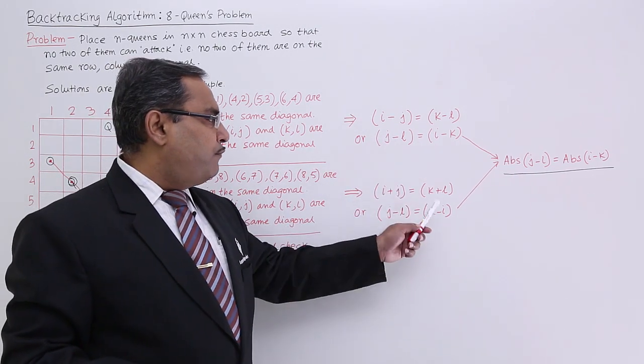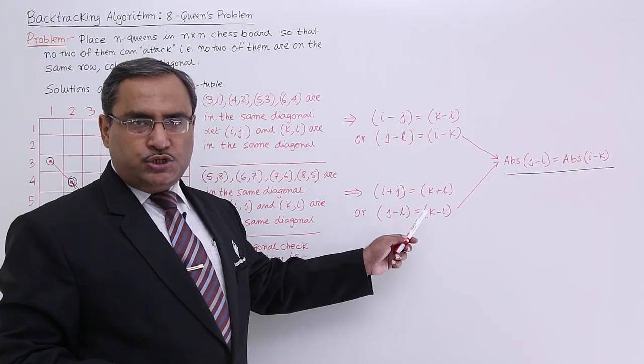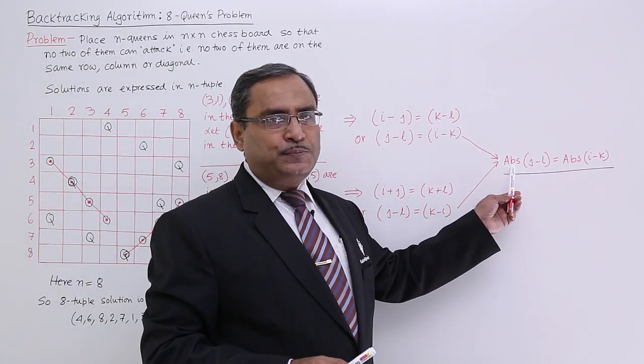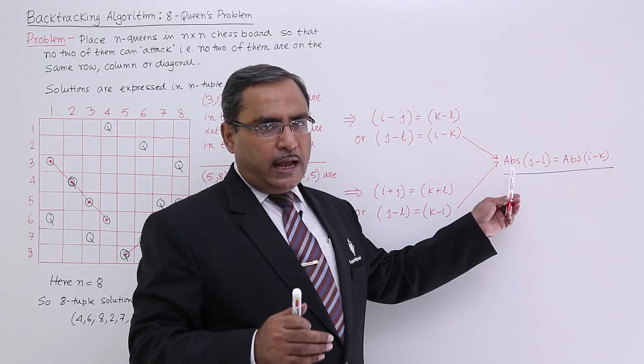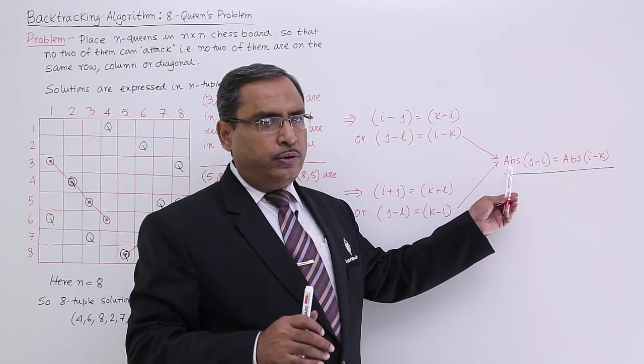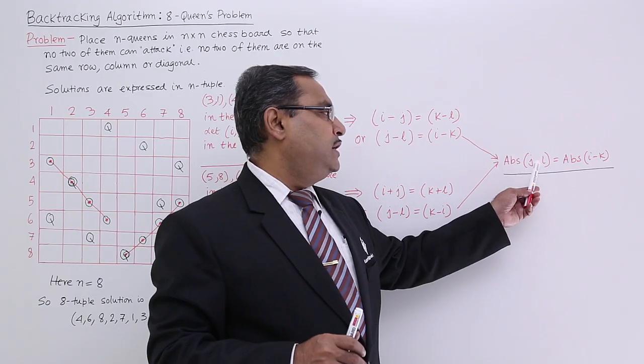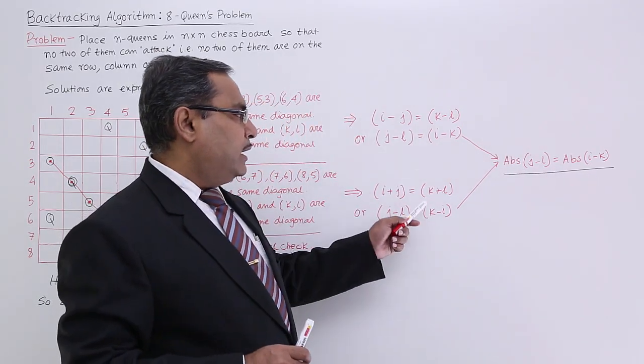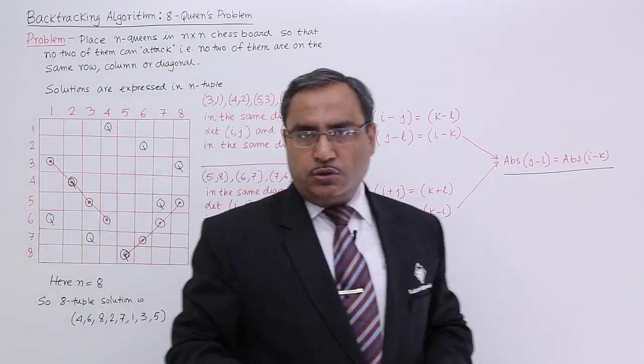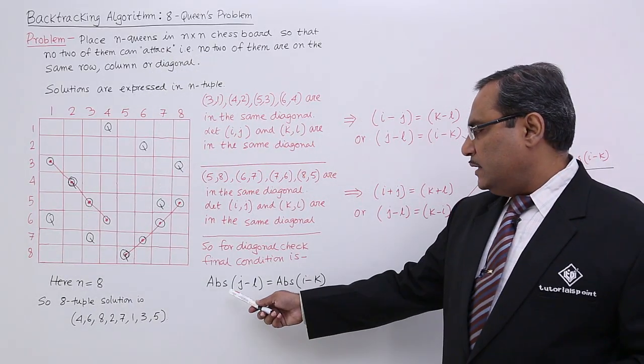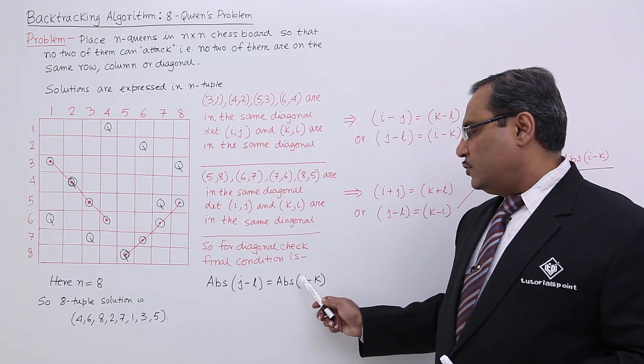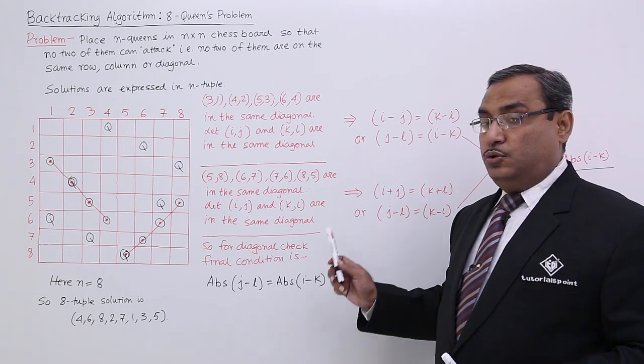Now, if we go for merging these two formula, these two conditions, I am getting abs, that is absolute, that is I am taking I shall take only the magnitude part ignoring the sign. So abs of j minus l is equal to abs of i minus k. So after merging them I am getting this. Now what will happen? There is a formula I am getting that is absolute of j minus l is equal to absolute of i minus k.